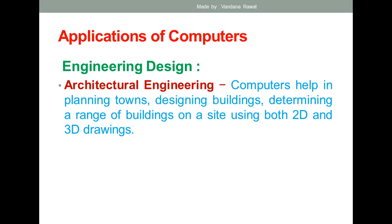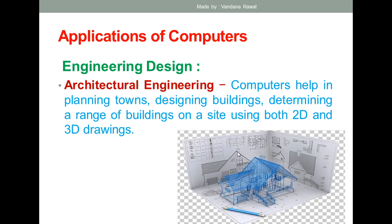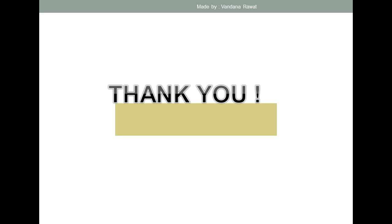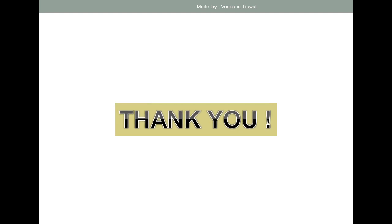In architectural engineering, computers help in planning towns, designing buildings, and determining the range of buildings on a site using both 2D and 3D drawings. Computers are used across all fields of engineering design. These are all the fields and applications where computers are being used. Thank you everyone — I hope you understood how computers are used in different applications.